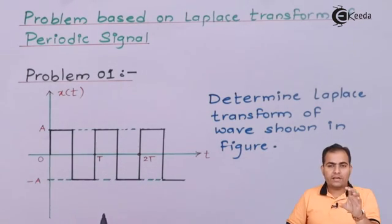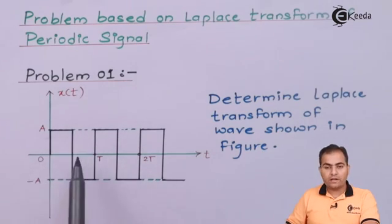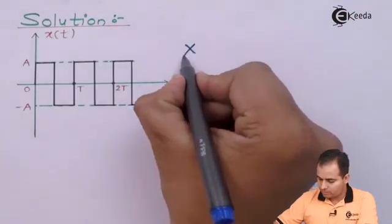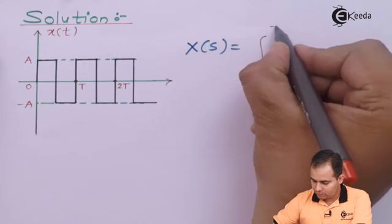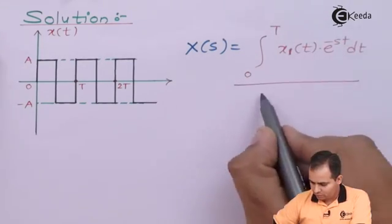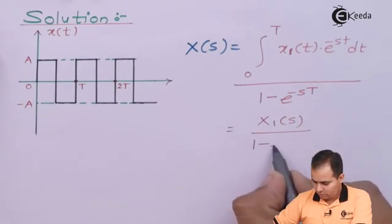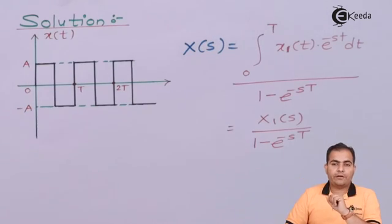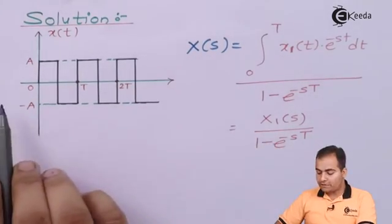We will write the statement of the Laplace transform for periodic signals, then find the function value existing between 0 and T. The statement is: X(S), the Laplace transform of the whole periodic signal, equals the Laplace transform of the first period from 0 to T. The signal present between 0 and T is represented by x1(t), and its Laplace transform is represented by x1(S).